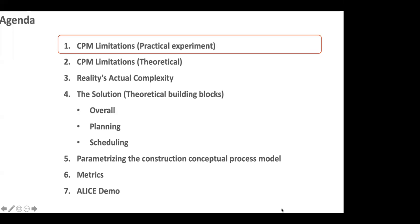From there we look at how to parametrize those pieces — what parametric means, how you make changes that reflect in your construction conceptual process model. Now that we know how to create changes, add a crane, remove a crane, model a delay over time — we figure out how to build something with these changes and then look at metrics: how do we measure how good our solutions are? We have an understanding of the problem from practical and theoretical perspectives, we know what we need to solve, we have the conceptual pieces of the solution, we parametrize those pieces, and then we measure solution quality. Then the ALICE demo with whatever time we have left.